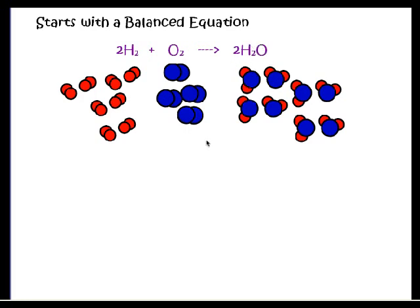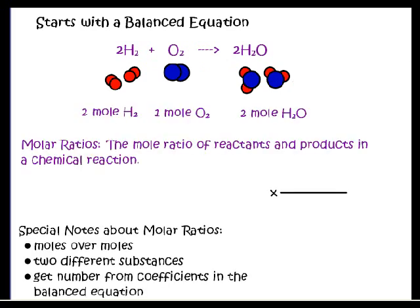We can work in different units like dozens, and of course our favorite in chemistry is the mole. So if I had two moles of hydrogen, I would need one mole of oxygen and get two moles of water — a mole is just a big number, just like a dozen. Everything stays in this two-to-one-to-two ratio at all times, set by our balanced equation. We call this a molar ratio, and we use it with dimensional analysis just like we've been doing.